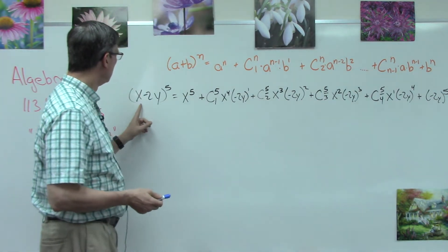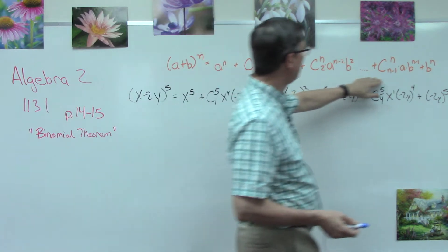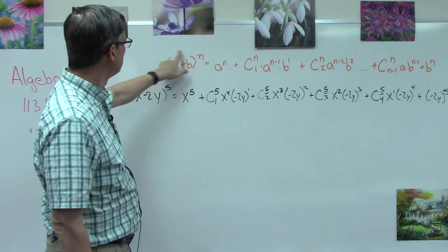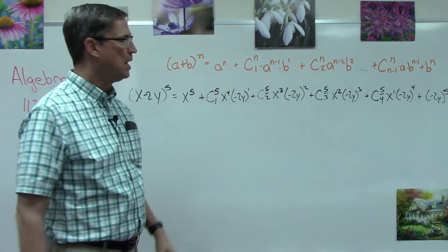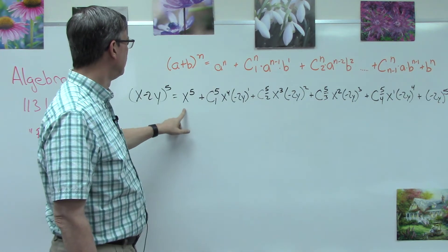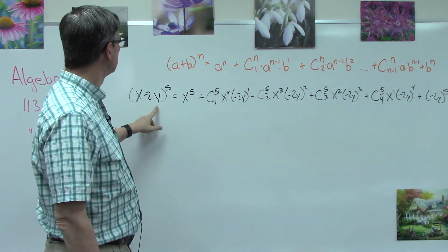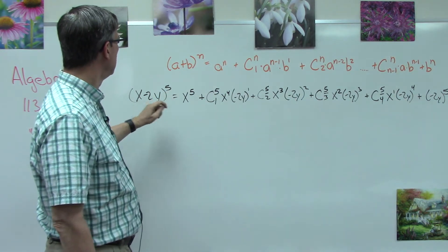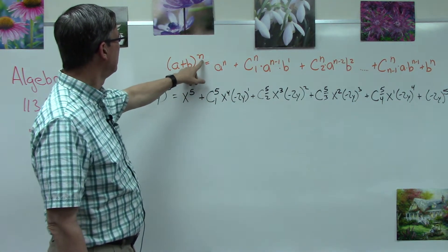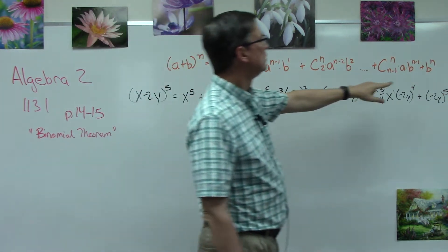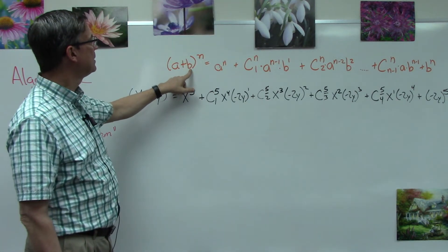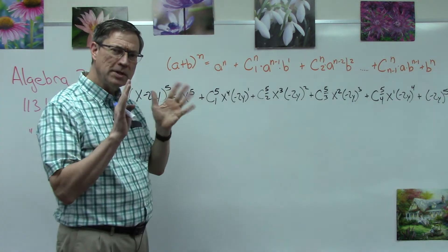So we're going to take this formula right here. I've copied it down. Notice: we're going to first take whatever the first term is of the parentheses raised to the n power — that first term all by itself is the first term in our answer. In this example I have x minus 2y to the fifth power, so I start with x to the fifth. When I get to the end, I'm going to have b to the n power. So we start with a to the n, and we end with b to the n — notice that little pattern.